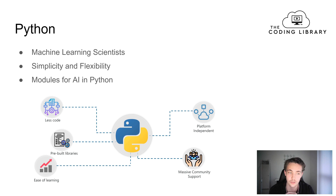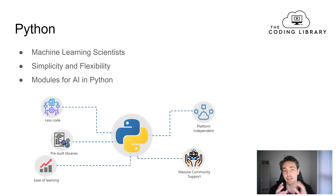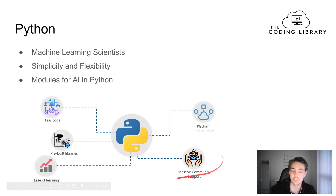Let's start with Python. Python is the most popular programming language right now regarding artificial intelligence, and also just in general. It is widely used by researchers in AI, machine learning scientists doing deep learning and neural networks, and also general machine learning algorithms. Python is really good for development, research, and prototyping, and it's very simple and flexible, so it's easy to learn.